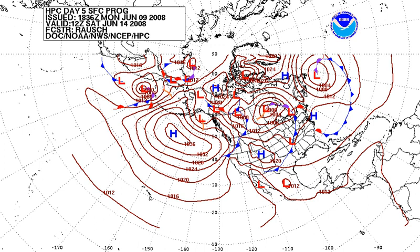The low temperature forecast for the current day is calculated using the lowest temperature found between 7 p.m. that evening through 7 a.m. the following morning. So, in short, today's forecasted low is most likely tomorrow's low temperature.